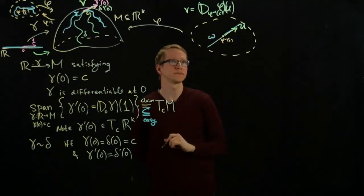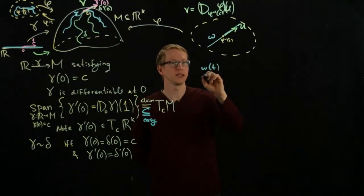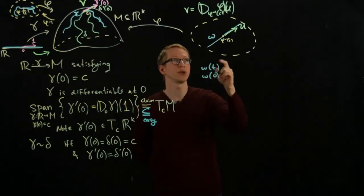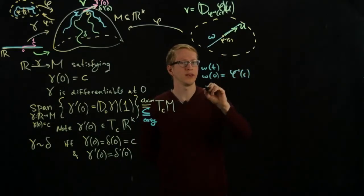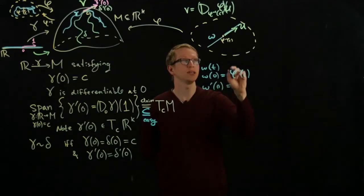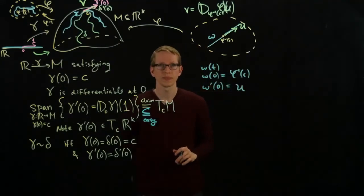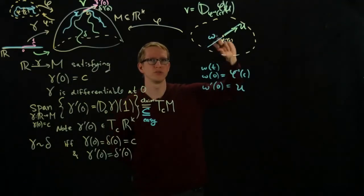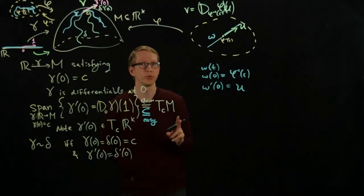So omega as a function of T has to satisfy the condition that omega of 0 equals phi inverse C, and omega prime at 0 equals U. And it's pretty clear from this picture that we can do this at least for some amount of time around the point 0.